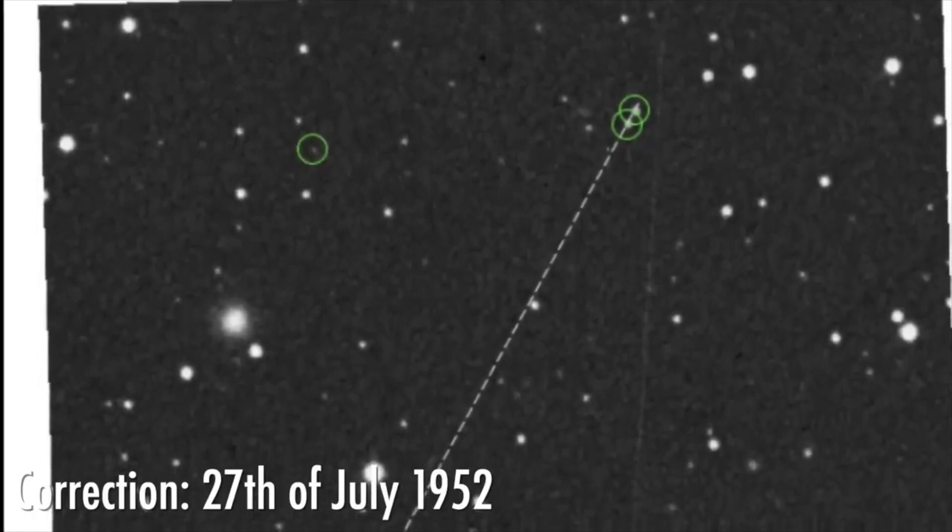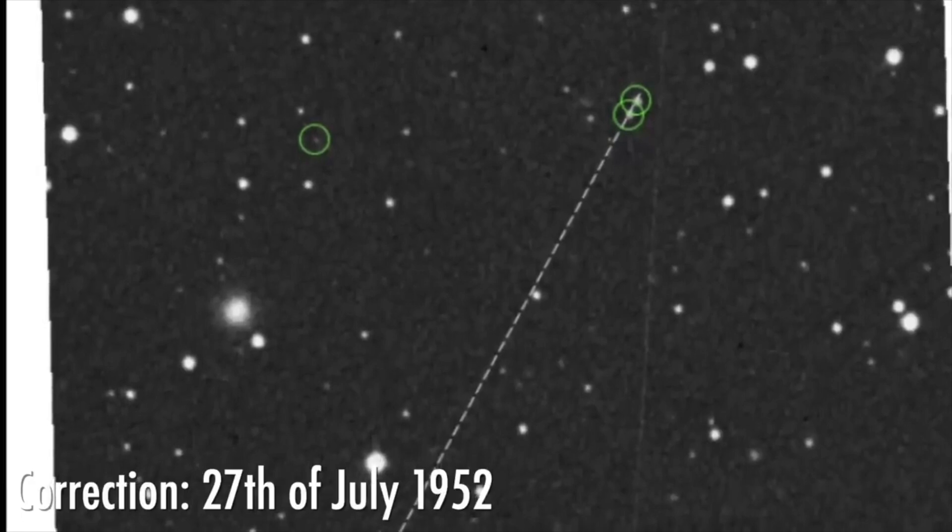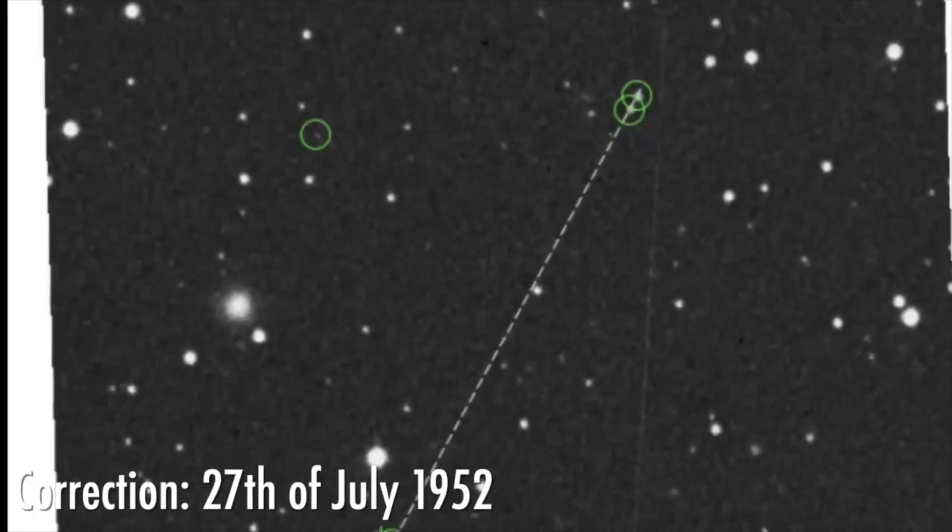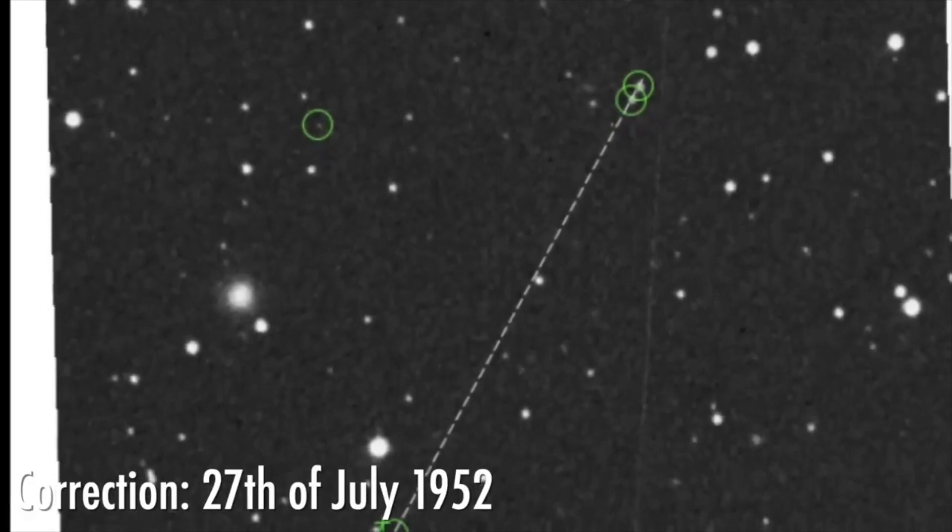In the one that was best of all, you could see five objects in a line, and it was called candidate five. If you look at that one, it is from the 28th of July 1952.